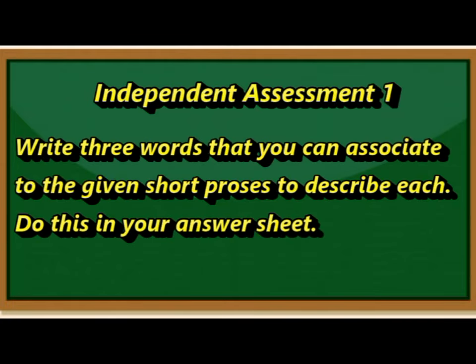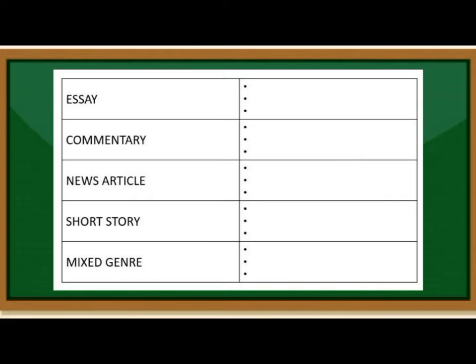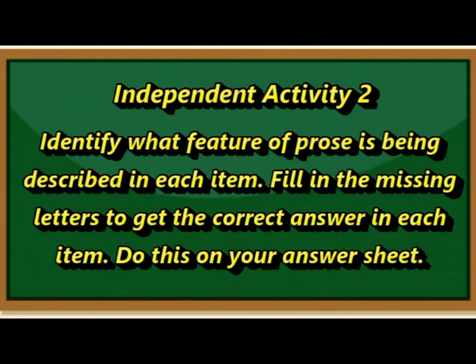Great job! Now it is your turn to do the other activities. Independent Activity 2 — identify what feature of prose is being described in each item. Fill in the missing letters to get the correct answer. Do this on your answer sheet.